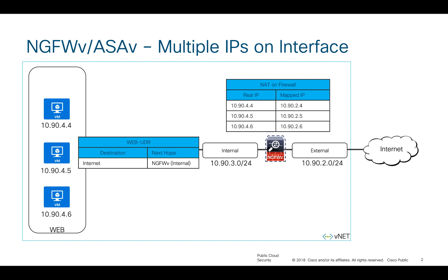If the requirement is to have an individual IP address for each application server or web server, you need to assign multiple private IP addresses on that particular NIC. This is an additional step when deploying a firewall in public cloud, because Azure infrastructure needs to understand that there is an additional IP address pointing to that interface. Once you have assigned that IP address on the Azure portal, you can come back to the firewall and create a NAT statement for it.